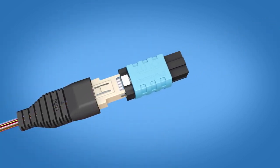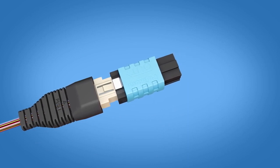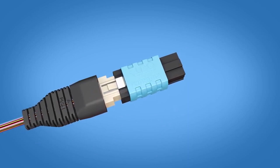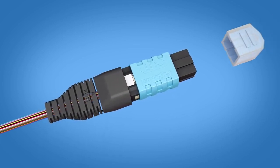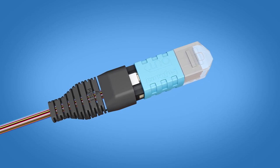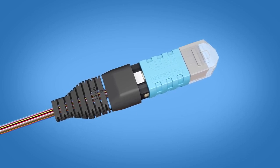Insert the connector housing onto the ferrule and spring unit and push the connector housing onto the spring unit until a click is heard. Place the dust cap back onto the connector. The installation is now complete.